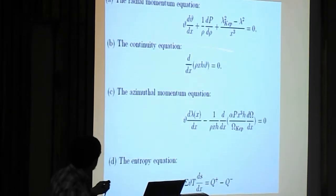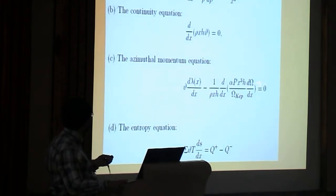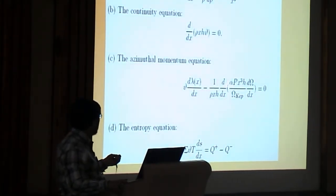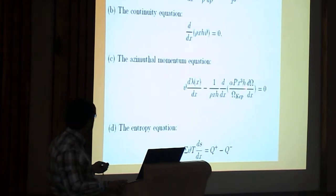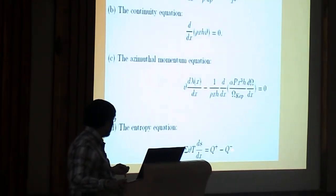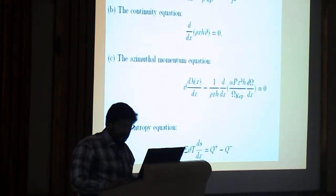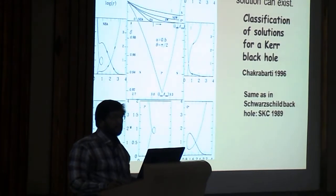This is the radial momentum equation, basically force balance in radial direction, continuity equation, the angular momentum is still transported by viscosity. Here I have replaced by Shakura-Sunyaev viscosity alpha parameter, and the entropy equation, because you can produce heat, you can also dissipate heat, and the difference must be, so first law of thermodynamics, we basically say differential version.